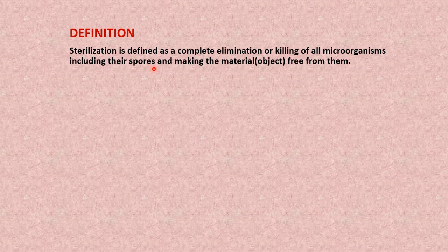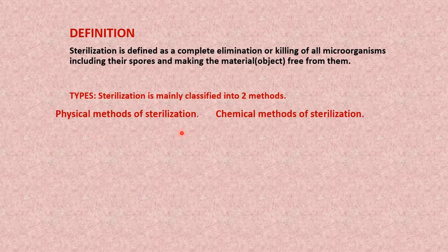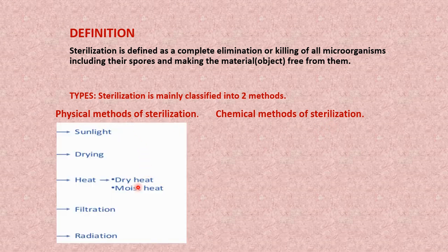There are two types of sterilization: physical methods and chemical methods. Physical methods are further classified into sunlight, drying, heat, filtration, and radiation. We have covered the previous types in earlier parts, and now in this part we are going to discuss about radiation.